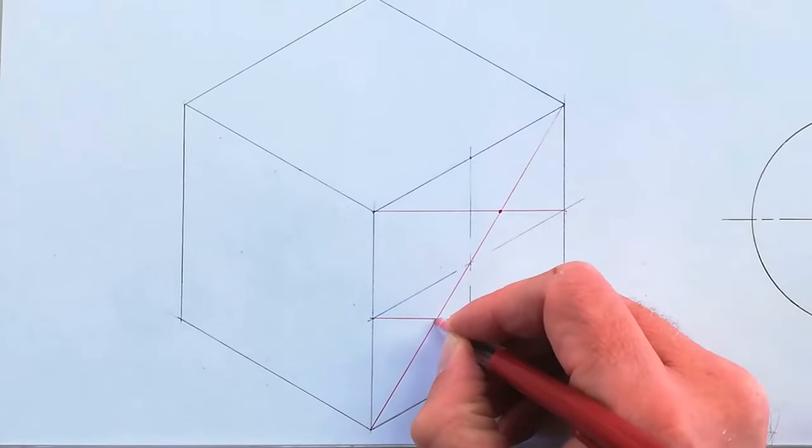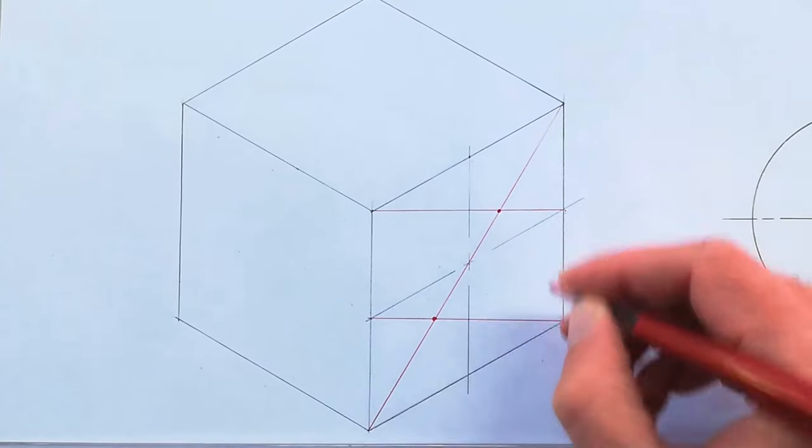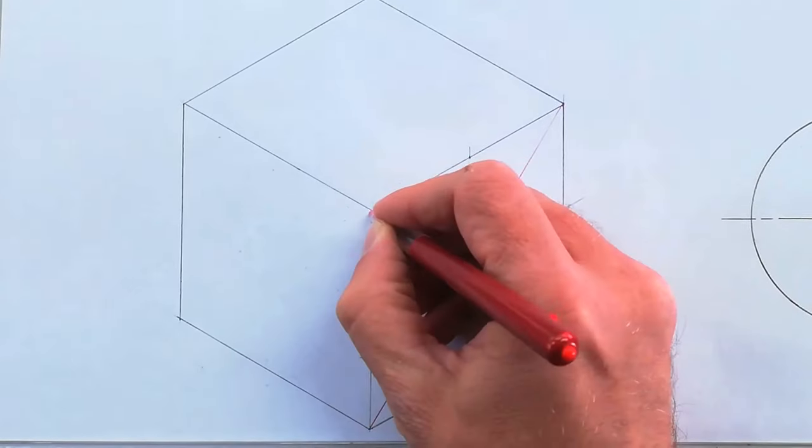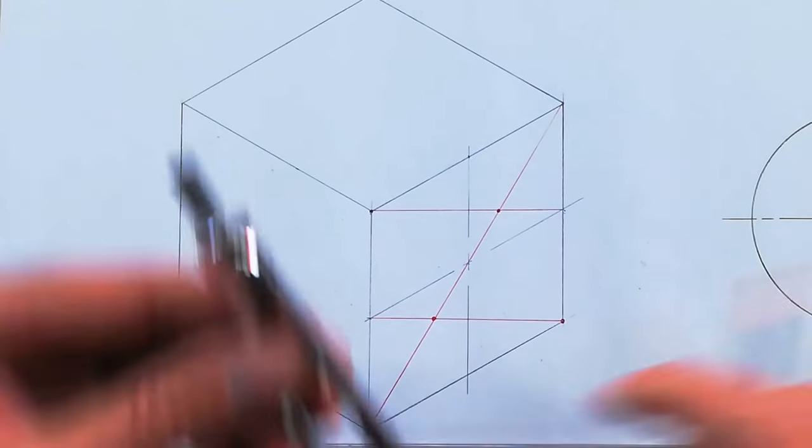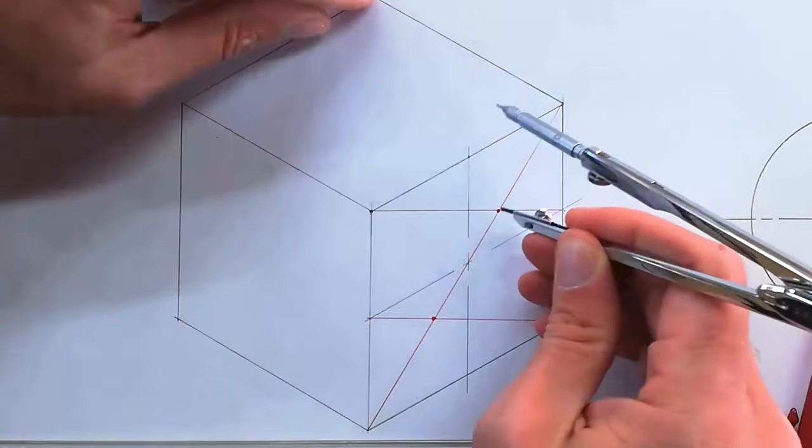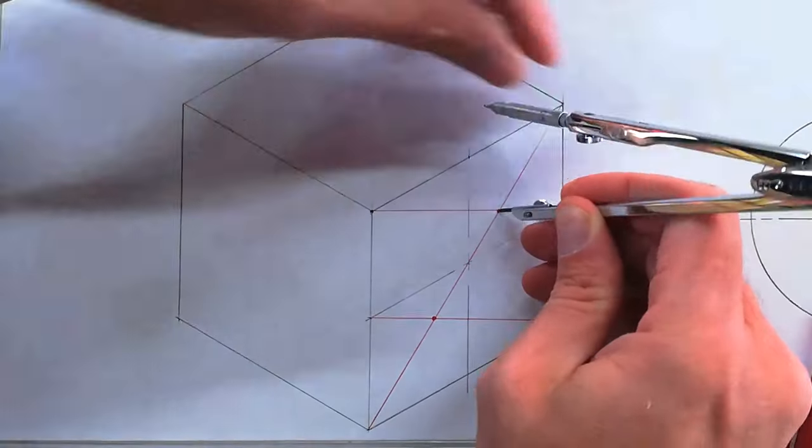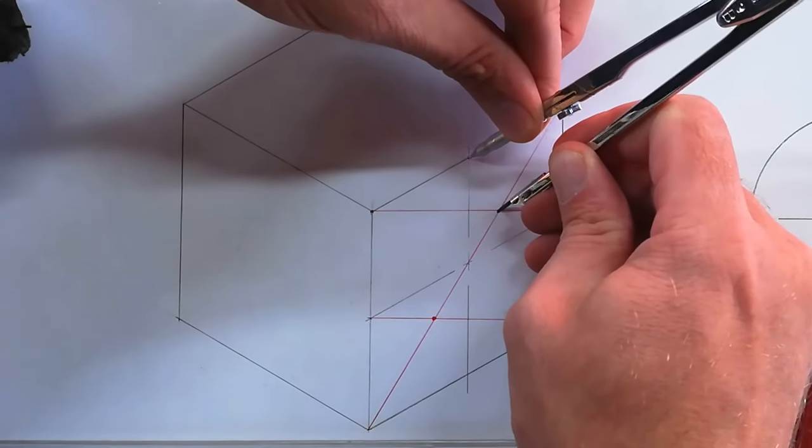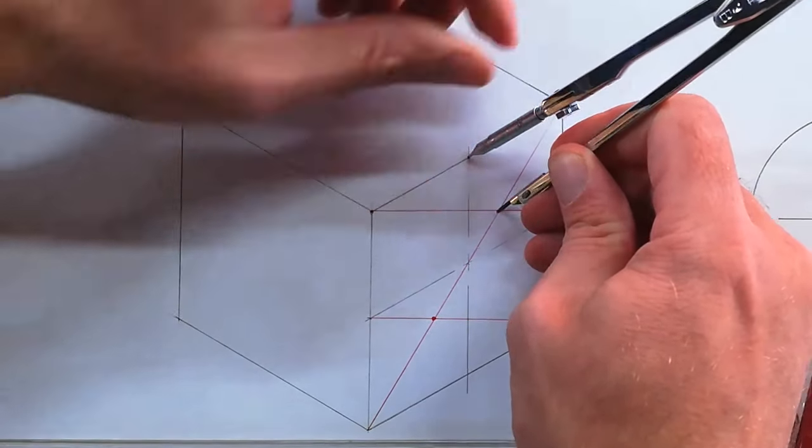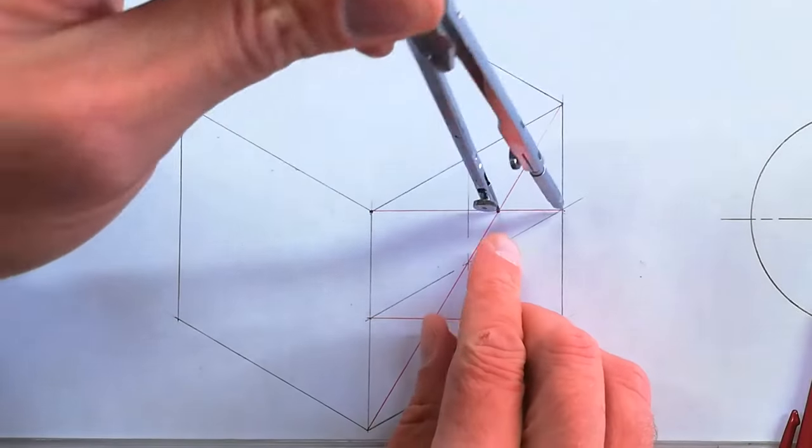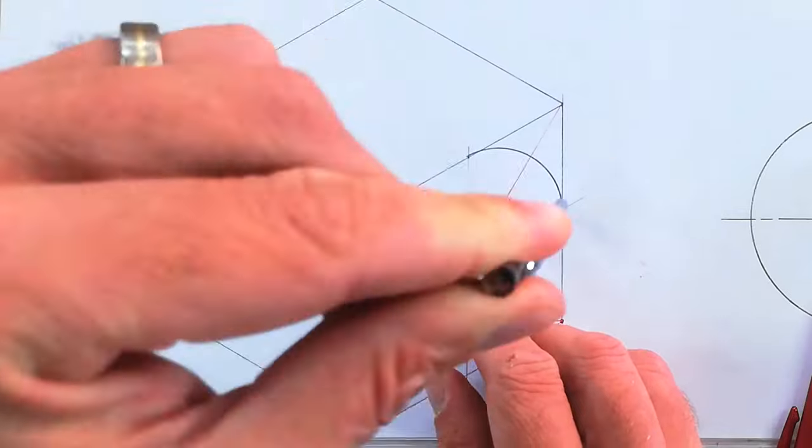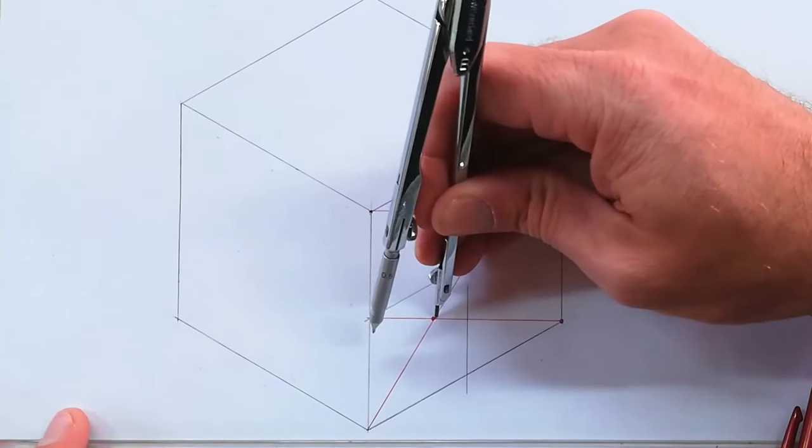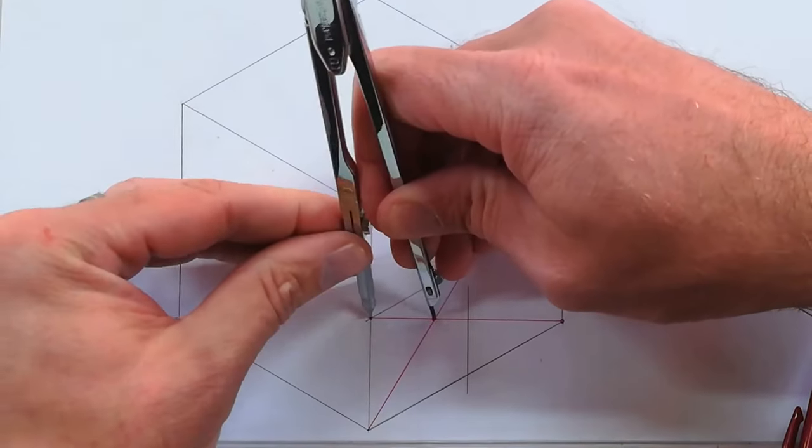Using the compass, you're going to start at this point, setting your compass on the distance from the center line. Double check it—it should line up on this side. Then draw your first arc. That same radius should work for the bottom one. Double check it before you draw it.